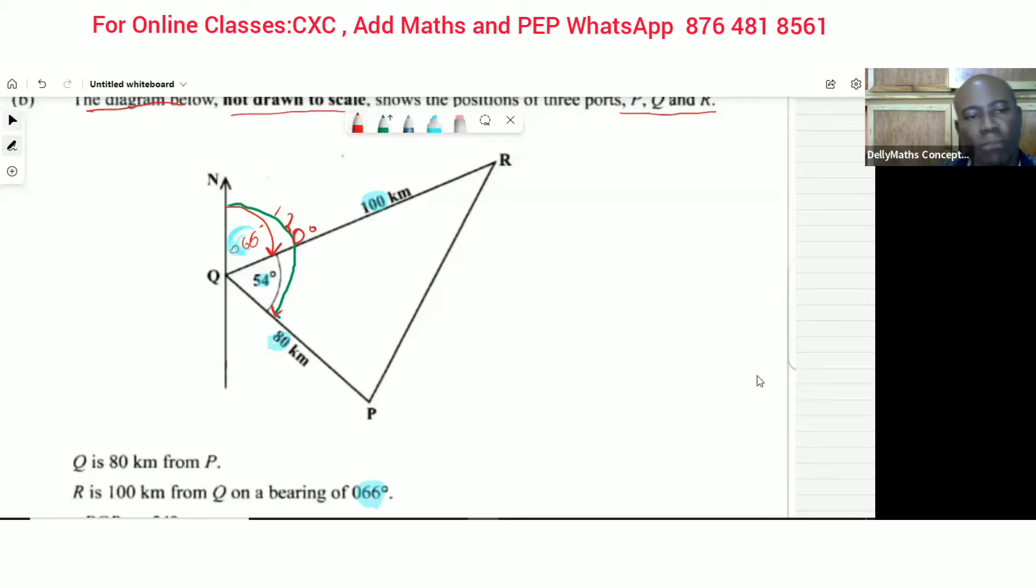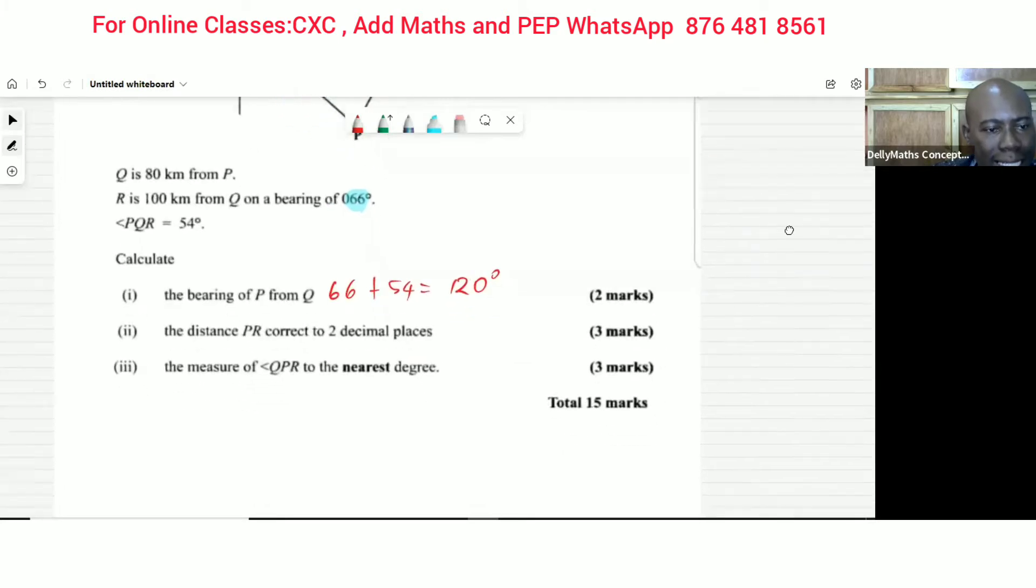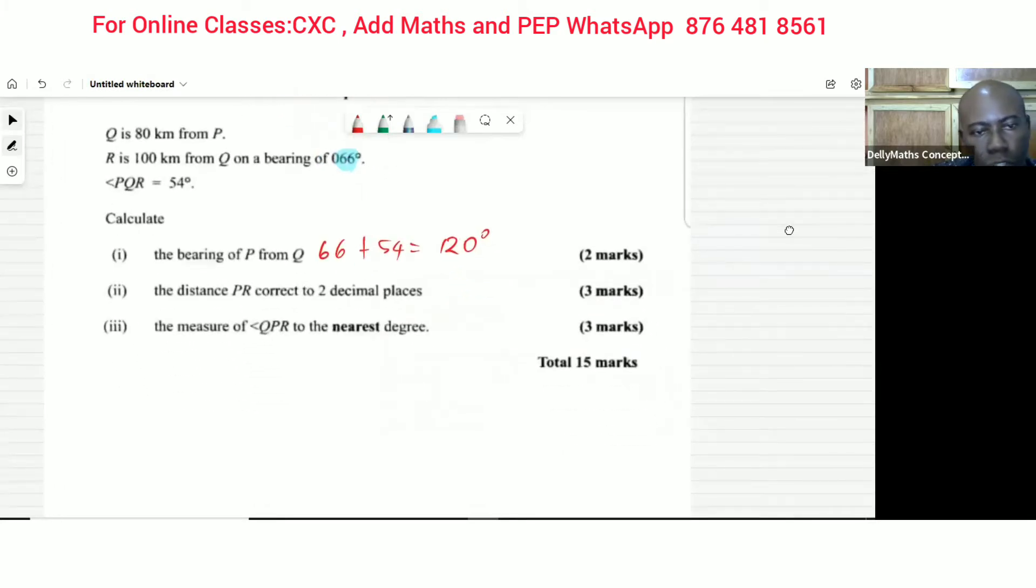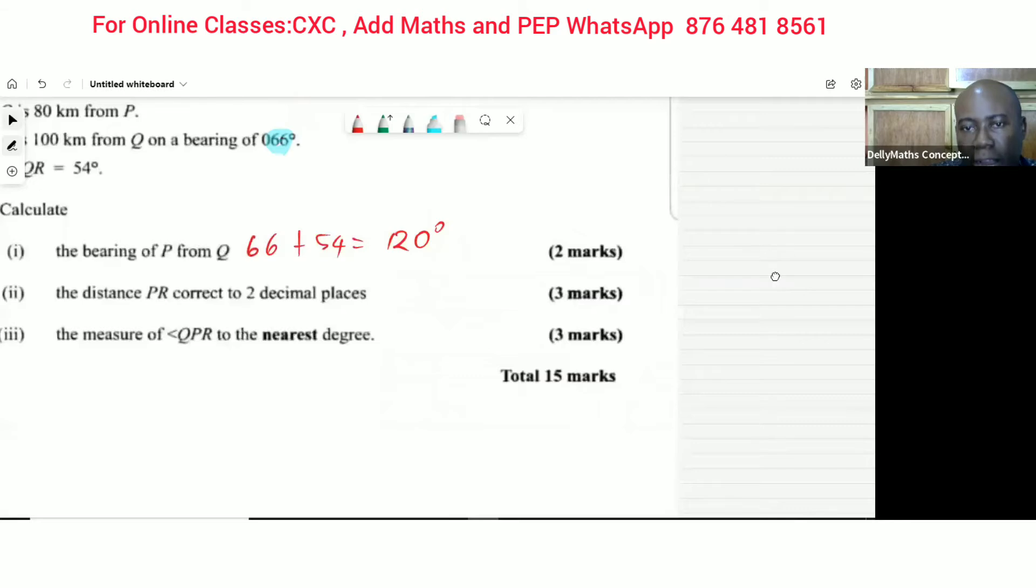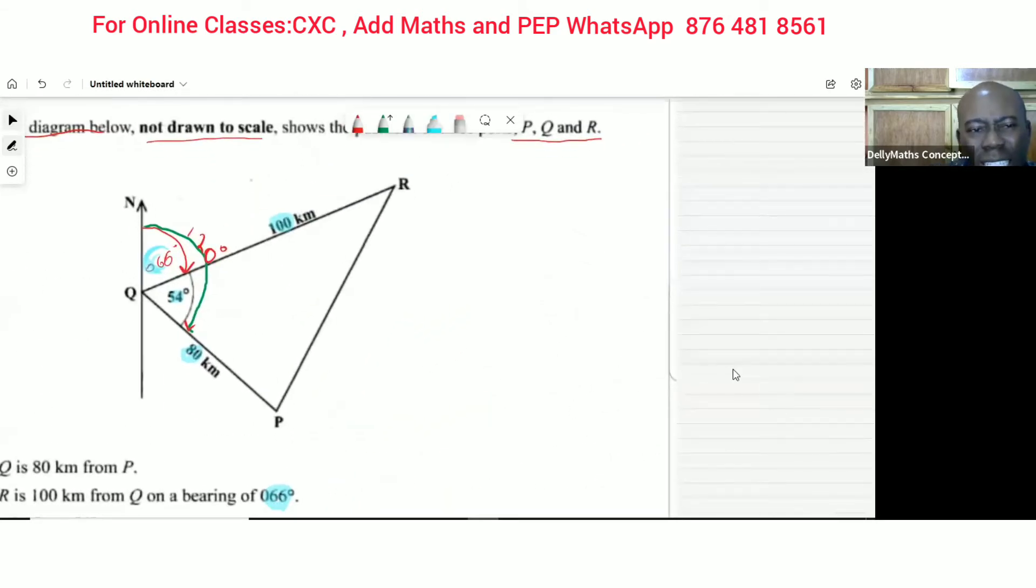Let's go to the next question. The next question says: the distance PR correct to two decimal places. So we want to find PR correct to two decimal places. Let's just look at what it is they really want us to find. They really want us to find this PR - this distance.